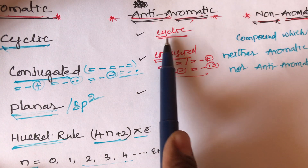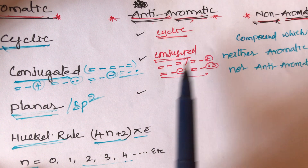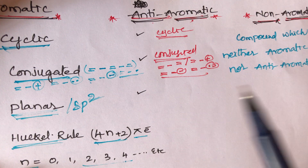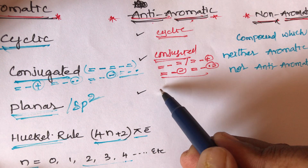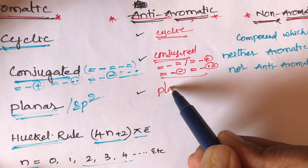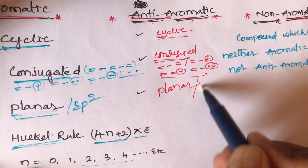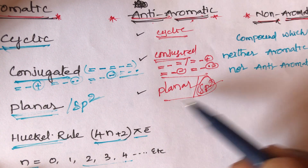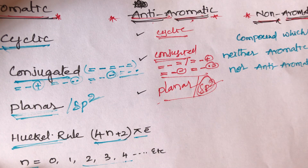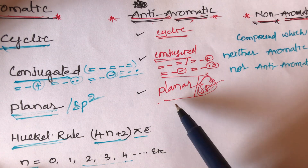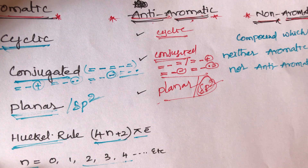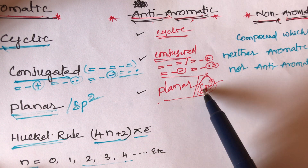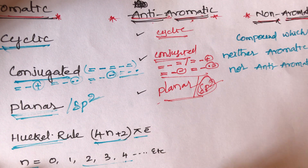For anti-aromatic conditions: first, it must be cyclic; second, the compound must be conjugated; third, the compound must contain a planar structure — meaning each and every atom undergoes SP2 hybridization.